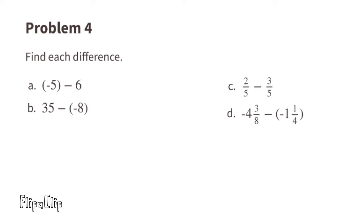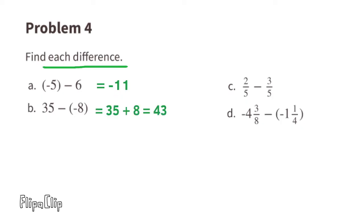Problem number four: find each difference. Part a: negative 5 minus 6 — that's like 5 negatives and 6 negatives for a total of 11 negatives, or negative 11. Part b: 35 minus negative 8 — that's like 35 and the opposite of negative 8.